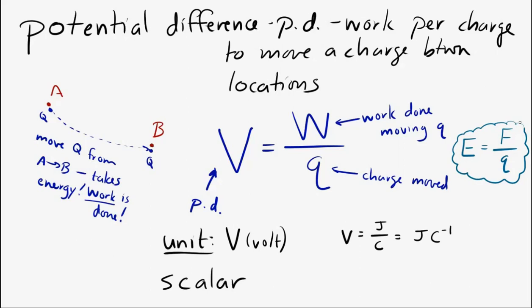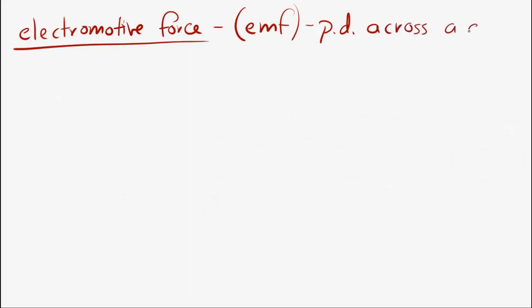Now let's look at electromotive force, which is usually abbreviated as EMF. This is the potential difference across a device which adds energy to a system, for instance, a battery. EMF is the potential difference across a battery or other device that adds energy to a system.